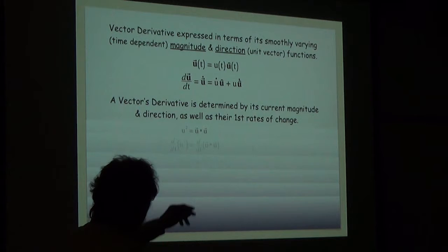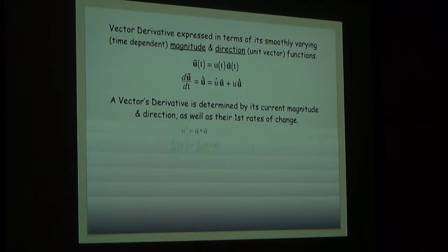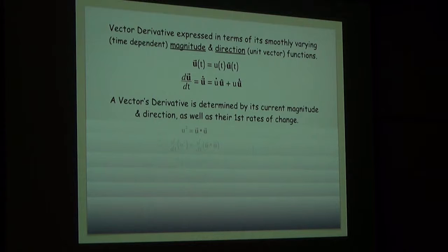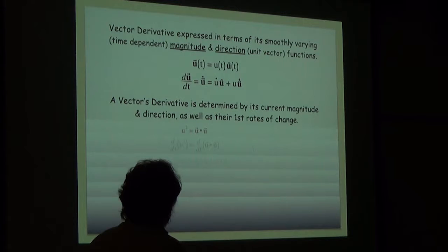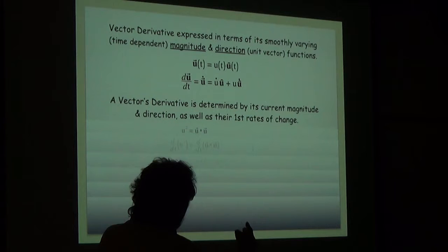Even though I'm using T as the independent variable in these notes, recognize that everything we do here is really not dependent on that. I could have written these notes using my favorite letter — squiggle — as the independent variable. It's just easy to think of things changing in time. We start off here saying: let's imagine a smoothly varying vector function, and start with it written in terms of its physically important parts. The first expression for the derivative would be to simply differentiate the product of the magnitude times the direction.